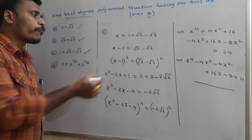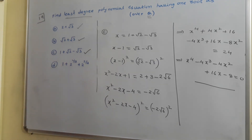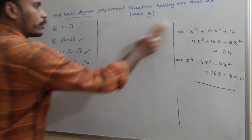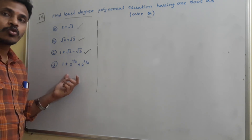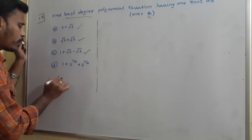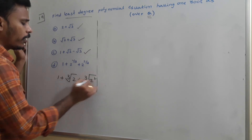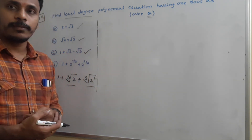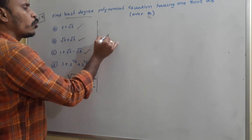For this type of problem, finding the equation using Method 1 is a bit complicated, but Method 2 directly gives the required equation. Next is problem D. One root of the equation is 1 plus 2 to the power 1/3 plus 2 to the power 2/3. That is 1 plus cube root of 2 plus cube root of 2 squared. These two are again irrationals, and we need a polynomial over rationals, so we need Method 2 to solve this.